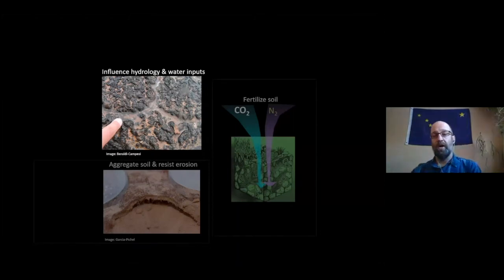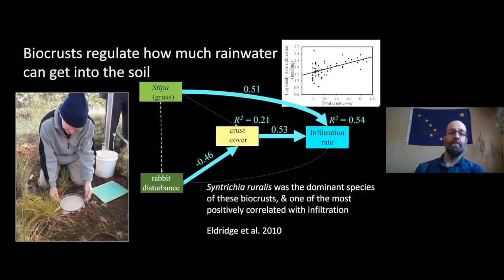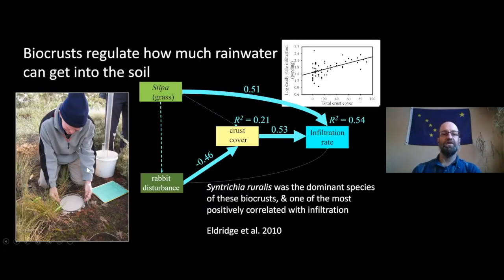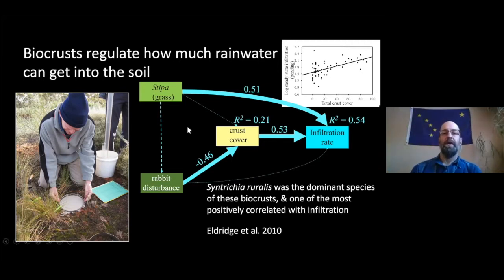We'll start with hydrology and water inputs. The first thing I want to say is that bio crusts regulate how much rainwater can get into the soil. A few years ago, I had the opportunity to work on a study about this. We were interested in measuring infiltration of water into soil using a cool tool called the disk permeameter — basically like a column of water that steadily delivers water to the soil — and we were interested in what controls that rate.